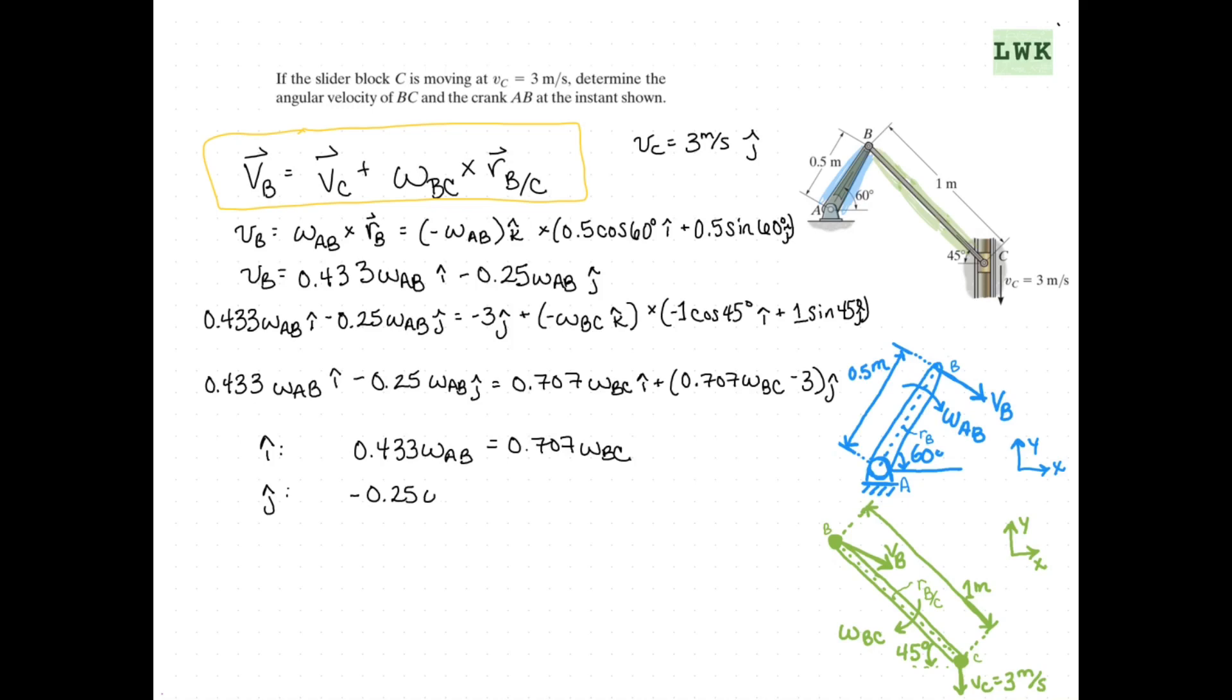And equating our J components will give us negative 0.25 omega AB equals 0.707 omega BC minus 3.